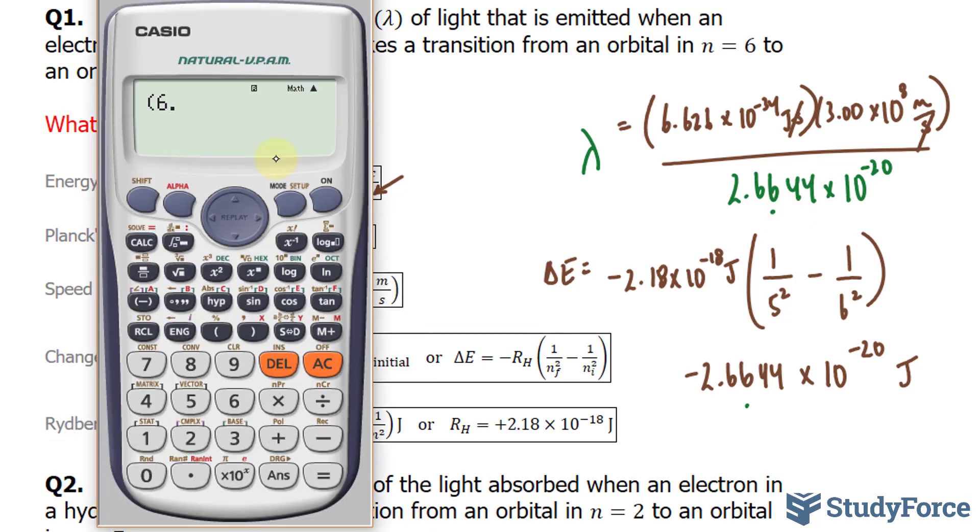So the numerator of this equation is 6.626 times 10 to the power of negative 34. That's being multiplied to 3.00 times 10 to the power of 8. And the product here is being divided by the number underneath, 2.6644 times 10 to the power of negative 20. We end up with 7.46 times 10 to the power of negative 6.